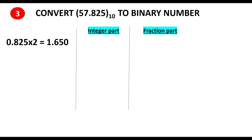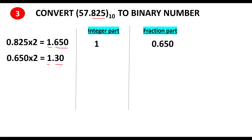Next, we take the fraction part 0.825 and use the repeated multiplication method. Multiply by 2, we get 1.650: integer part is 1, fraction part is 0.650. Take 0.650 and multiply by 2, you get 1.3: integer part is 1, fraction part is 0.3. Take 0.3 and multiply by 2, you get 0.6: integer part is 0, fraction part is 0.6.